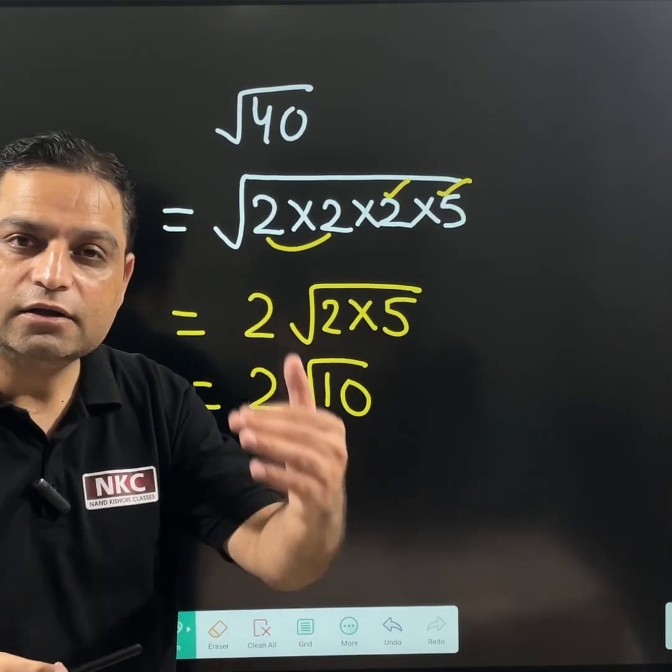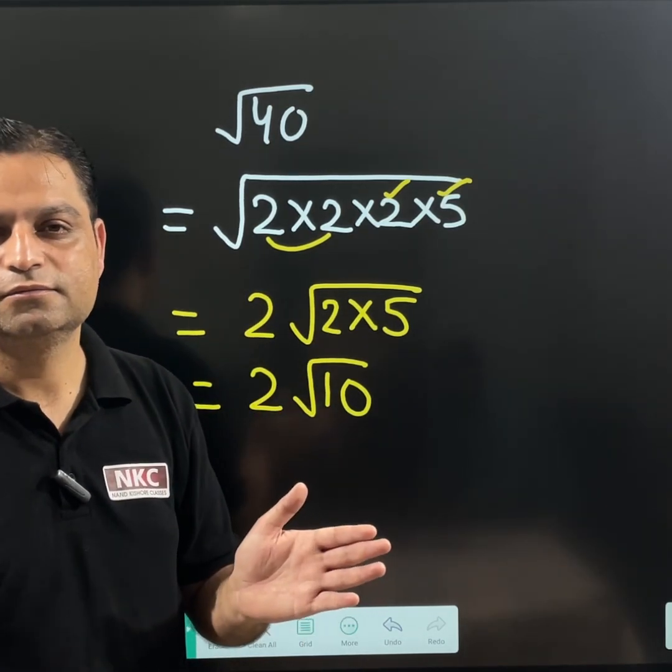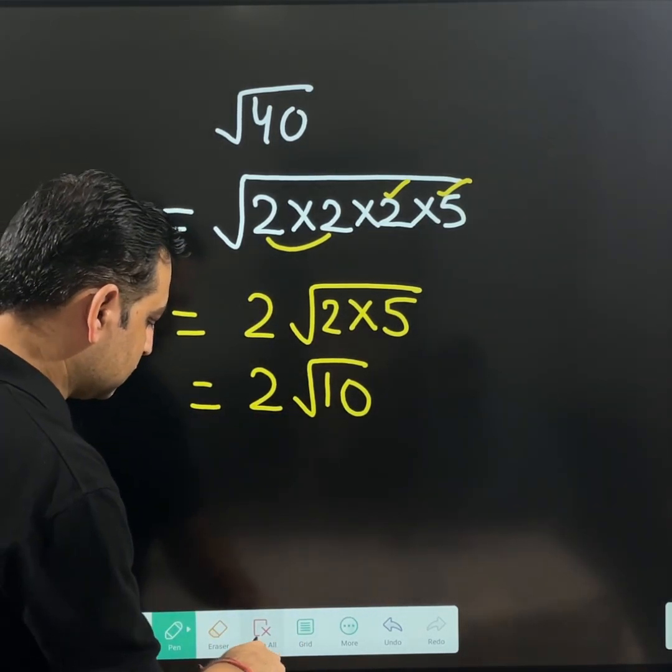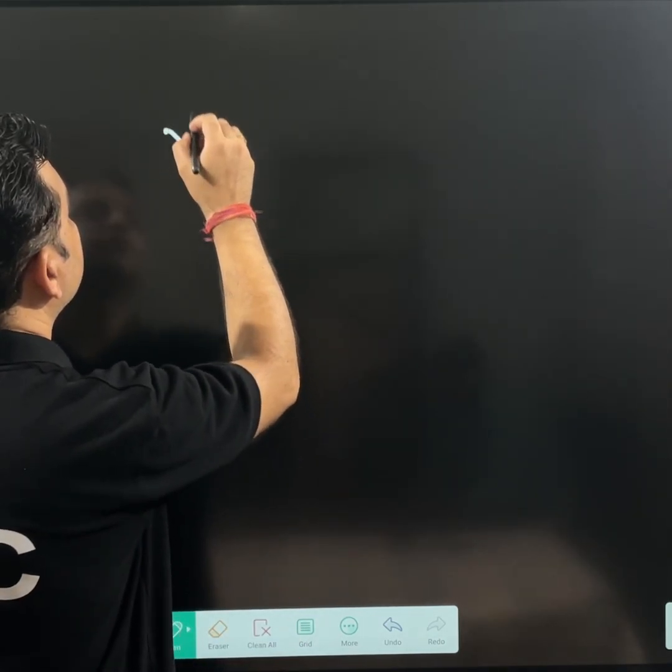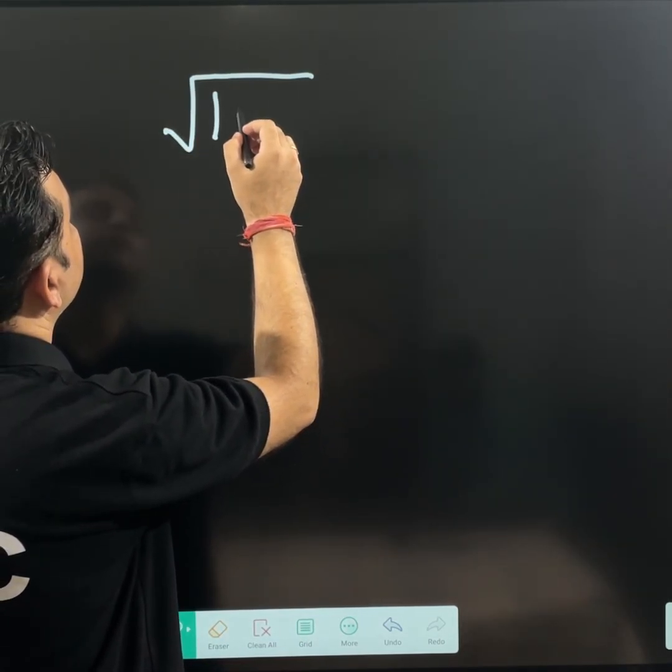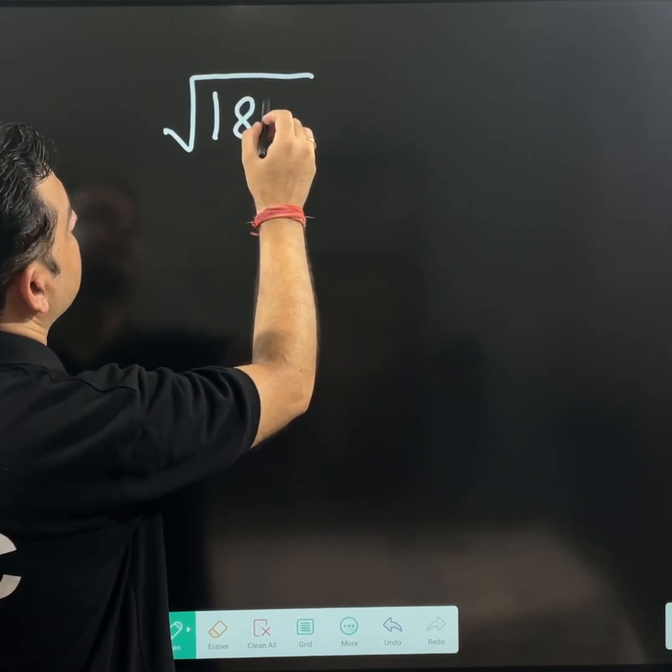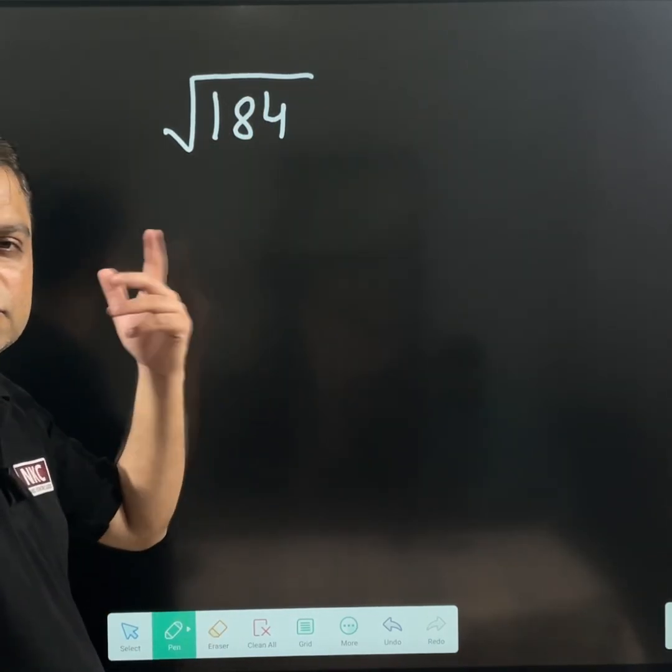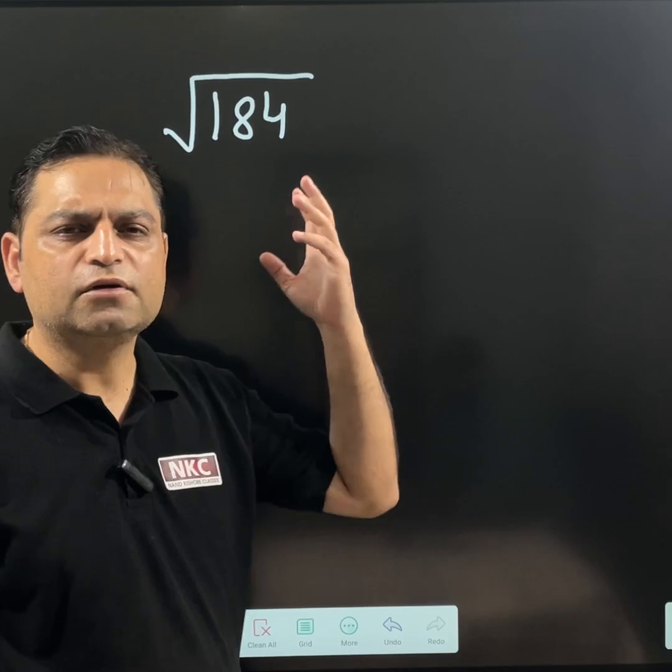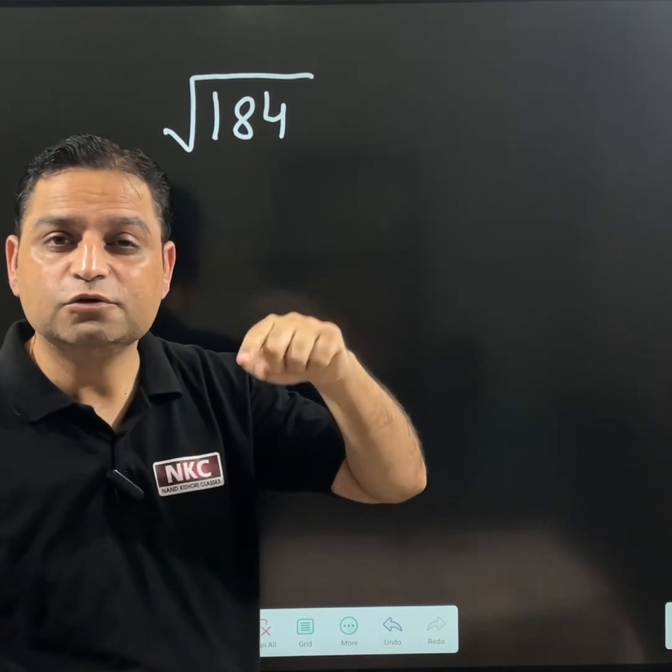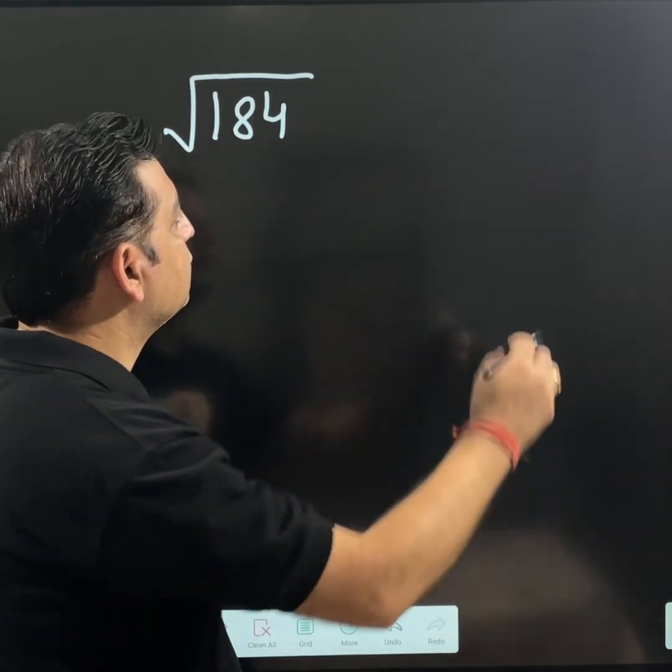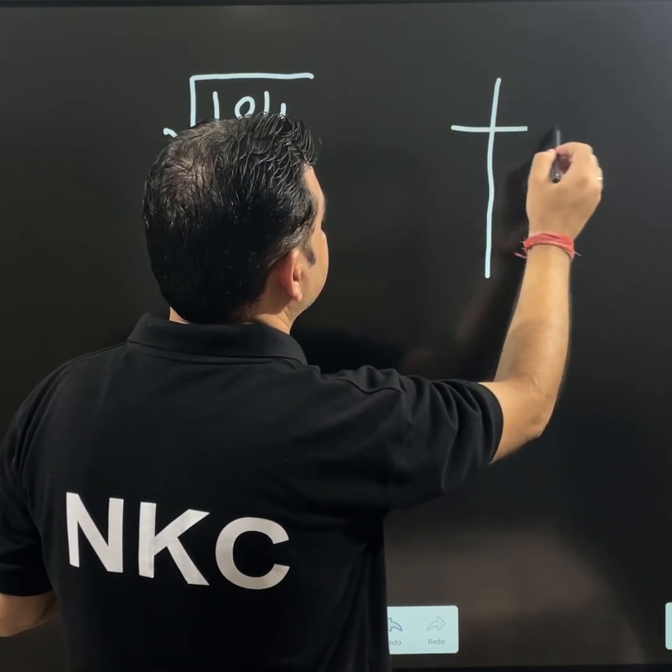This is the process to be followed. Now you are ready to do any big number. Any big number you can try out. Let's suppose you have got one question 184. Let's suppose square root of 184 we need to find. Now it is not a perfect square, right? But still you can start doing it. Let us make its prime factorization.